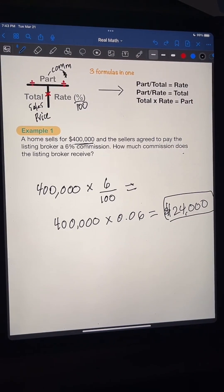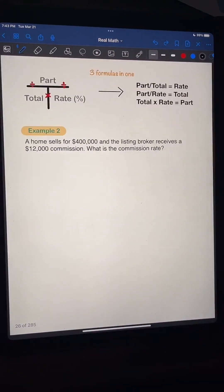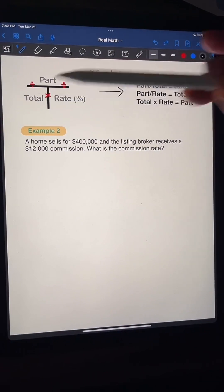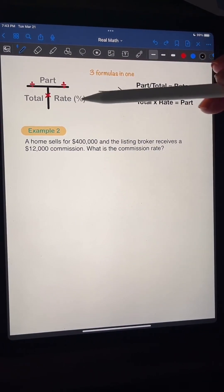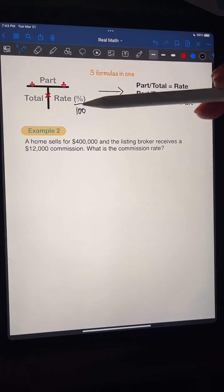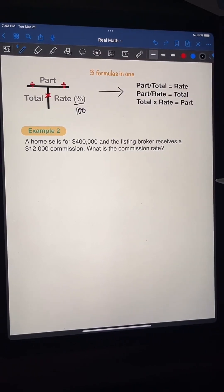All right. Let's get started on the next one using this T-method. You're going to see how easy it is to use the T-method when you're solving for these problems. Okay? All right. Remember, part is your commission. Total is the house. How much the house sold. Rate is your commission percentage. Remember, divide it by 100. Always divide your percent by 100. So that way you can multiply it times this. Okay? Or divide it by the part.